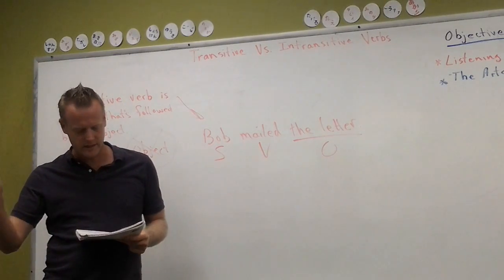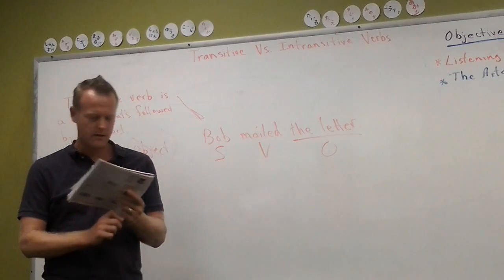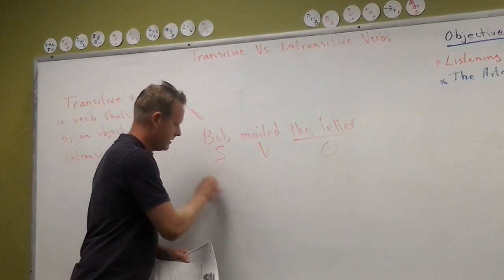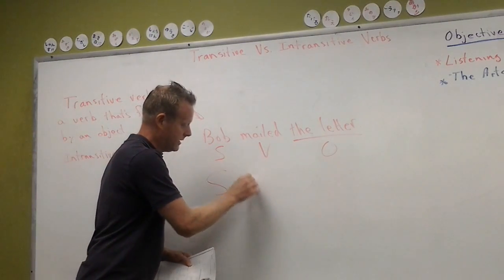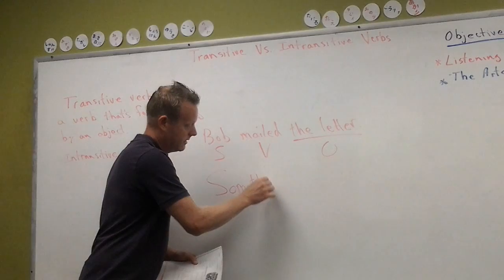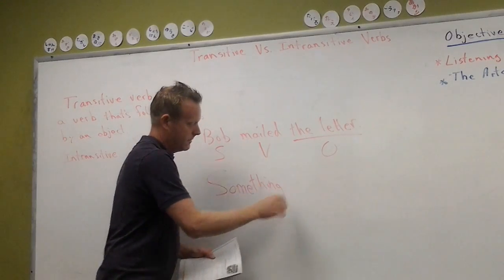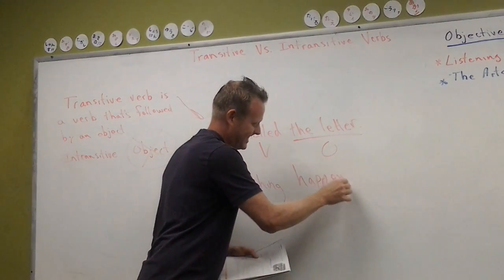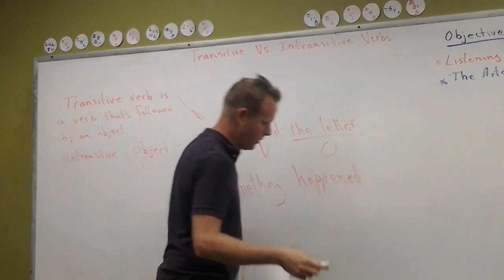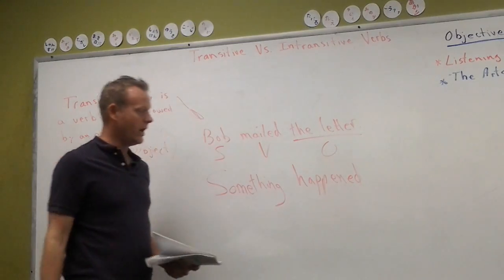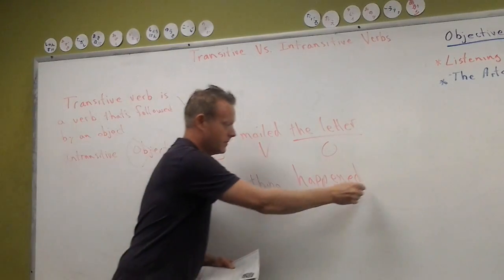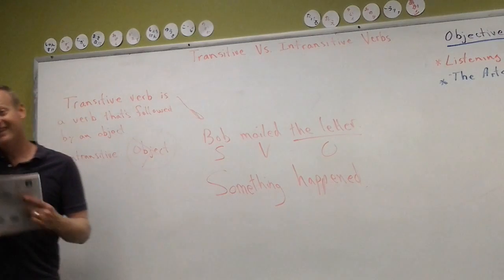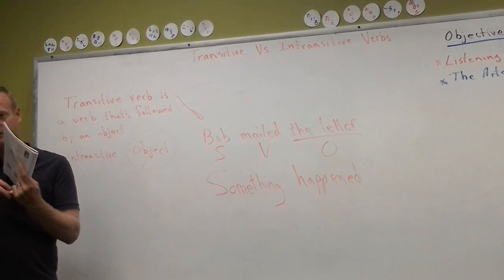Now let's give an intransitive example. Read D: 'Something happened.' What is the object? There isn't one. So what is it — transitive or intransitive? Intransitive.